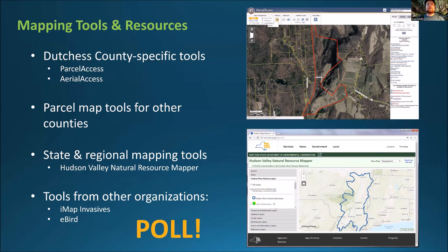All right, just another second. For Dutchess County tools, it looks like there are some people who are somewhat familiar with it — that's good, so hopefully some of this should be overview. There are a number of you who haven't, so that's great too. And looking down at the Hudson Valley Natural Resource Mapper, it looks like we have a lot of people who are not that familiar with it — great, so Nate will give a good overview of that. Hopefully both of these tools will be useful.